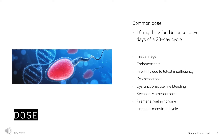Dysmenorrhea (Adult): 10 or 20 mg daily from day 5 to 25 of the cycle. Dysfunctional uterine bleeding (Adult): For arresting a bleeding episode, 10 mg twice daily for 5 to 7 days. Alternatively, 20 or 30 mg daily may be given for up to 10 days. For continued prevention, 10 or 20 mg daily from day 11 to 25 of the cycle.